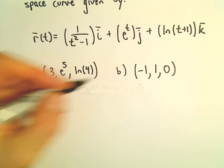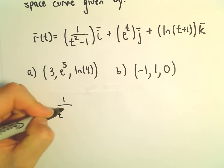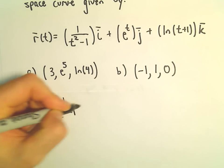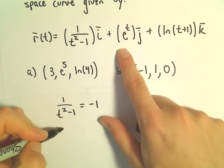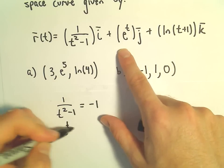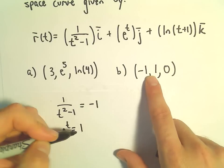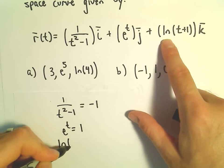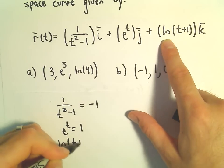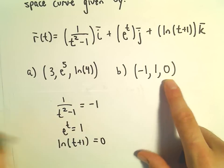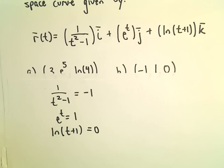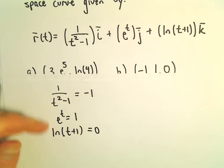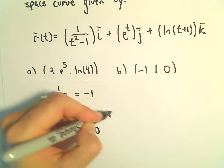So we check part b. We look at 1 over t squared minus 1 set equal to negative 1, e to the t set equal to 1, and the natural logarithm of t plus 1 set equal to 0. Again, we're asking: is there a value of t that satisfies all three of these equations simultaneously?